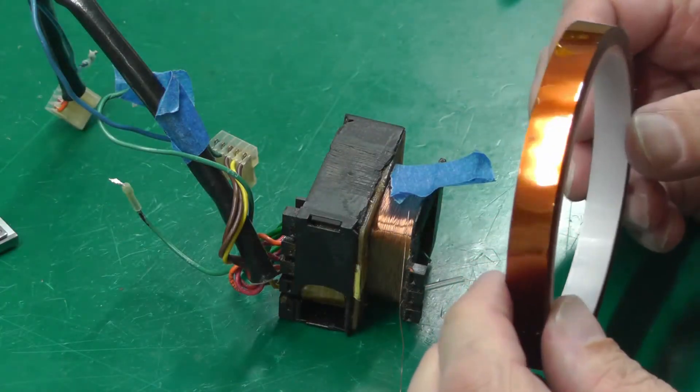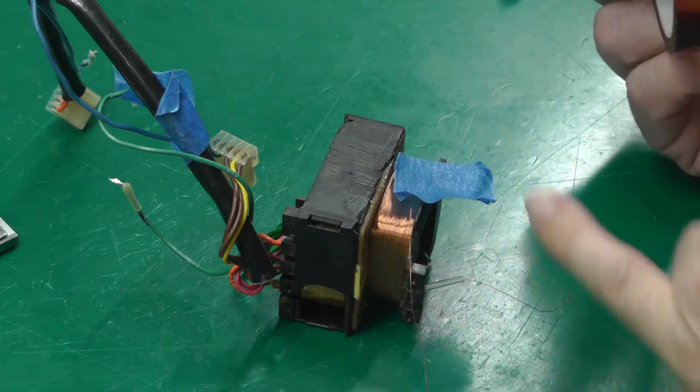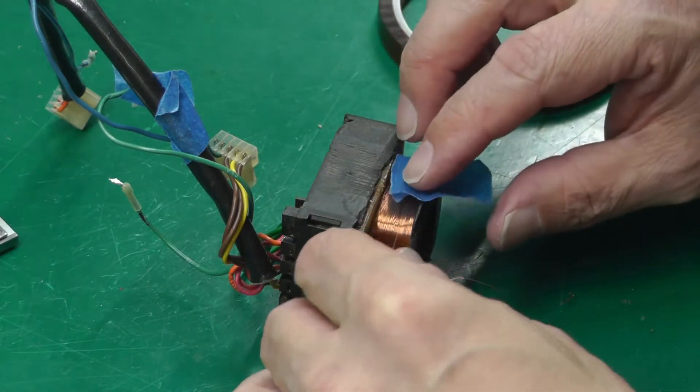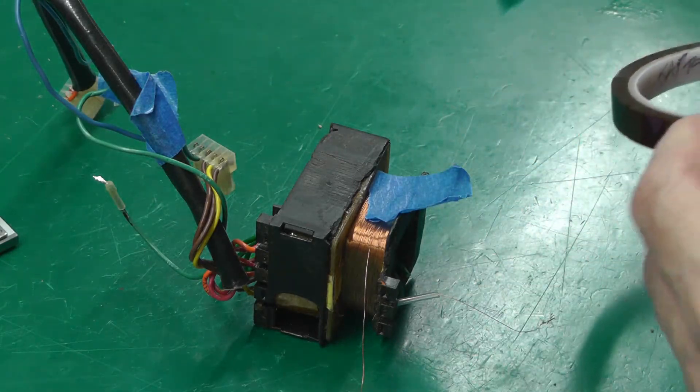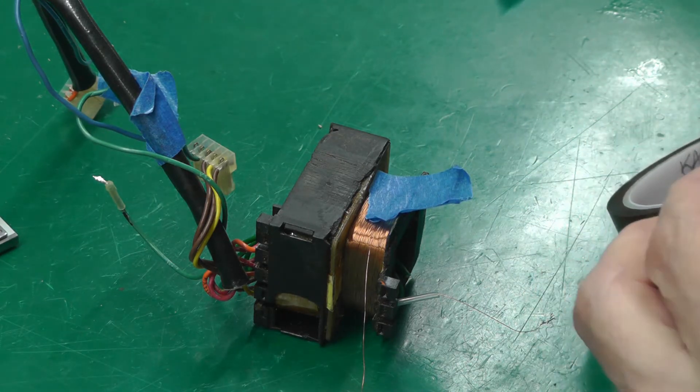So what I'm gonna do now is put some Kapton tape over this layer right round and that will actually hold it in place because it can sort of jump and unravel itself, so I don't really want to do that. So I'll go ahead and do that now.